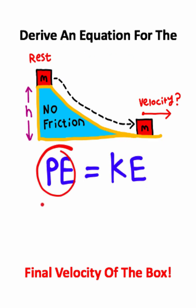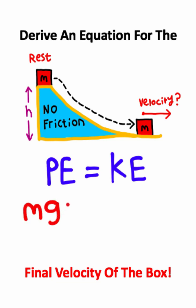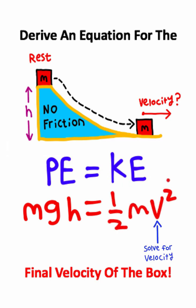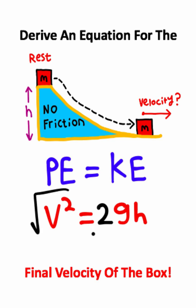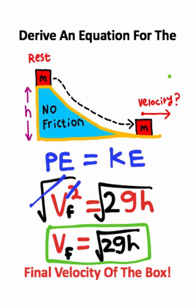The equation for gravitational potential energy is mass times gravitational acceleration times the height at which the object is raised. The equation for linear kinetic energy is one half mass times velocity squared. I can cancel the mass on both sides, and multiply both sides by two to cancel the one half. All I need to do from here is square root both sides of the equation, and this gives me the formula for the final velocity of the box.